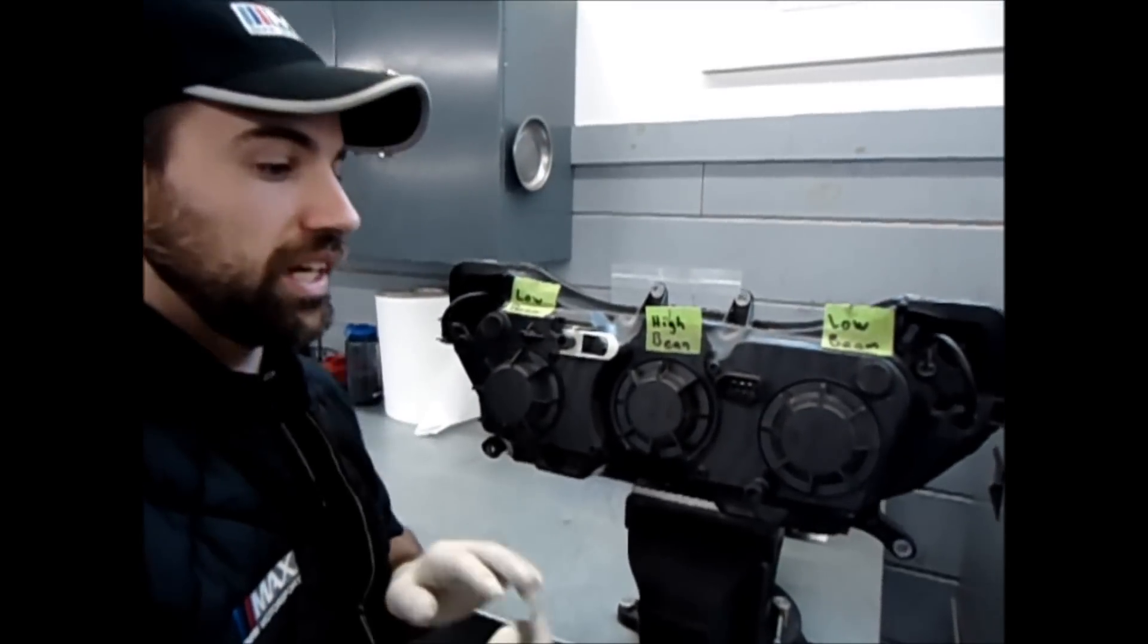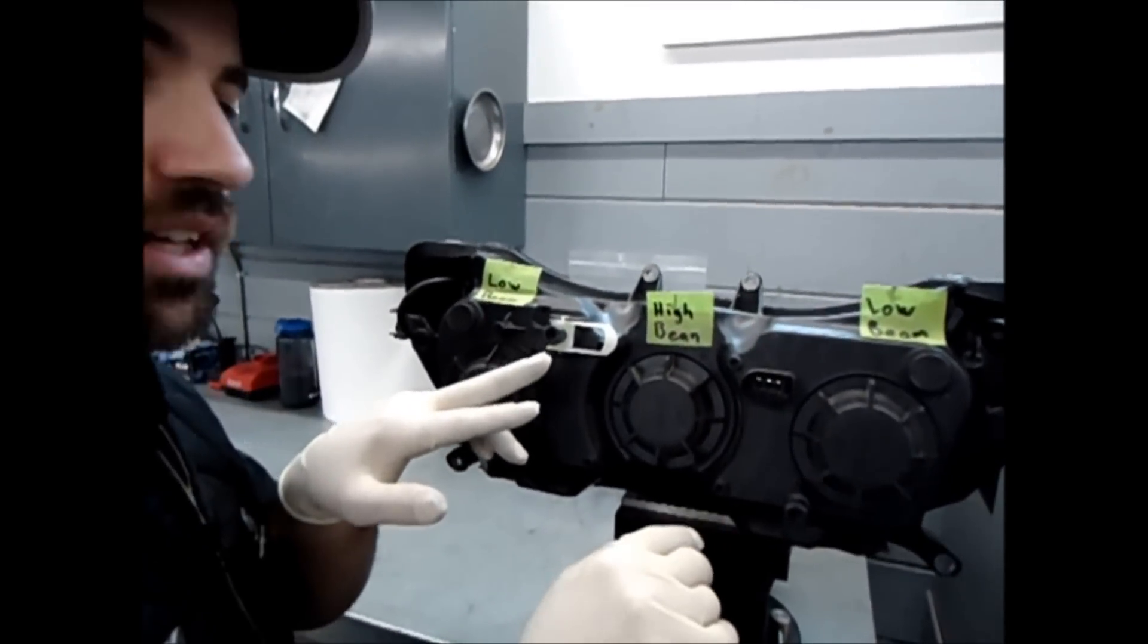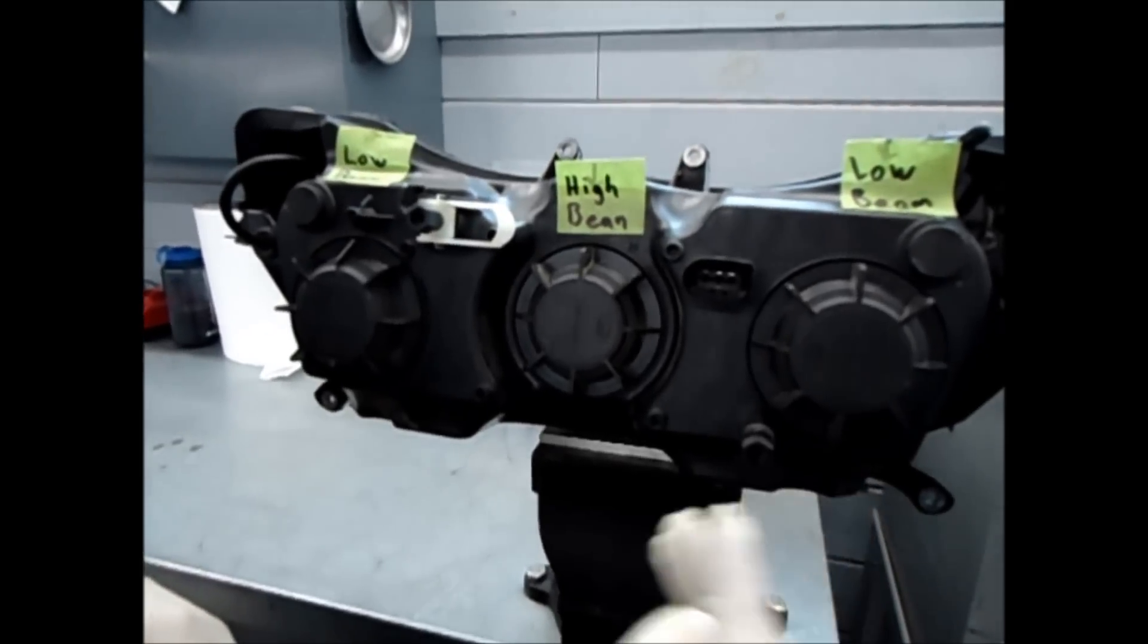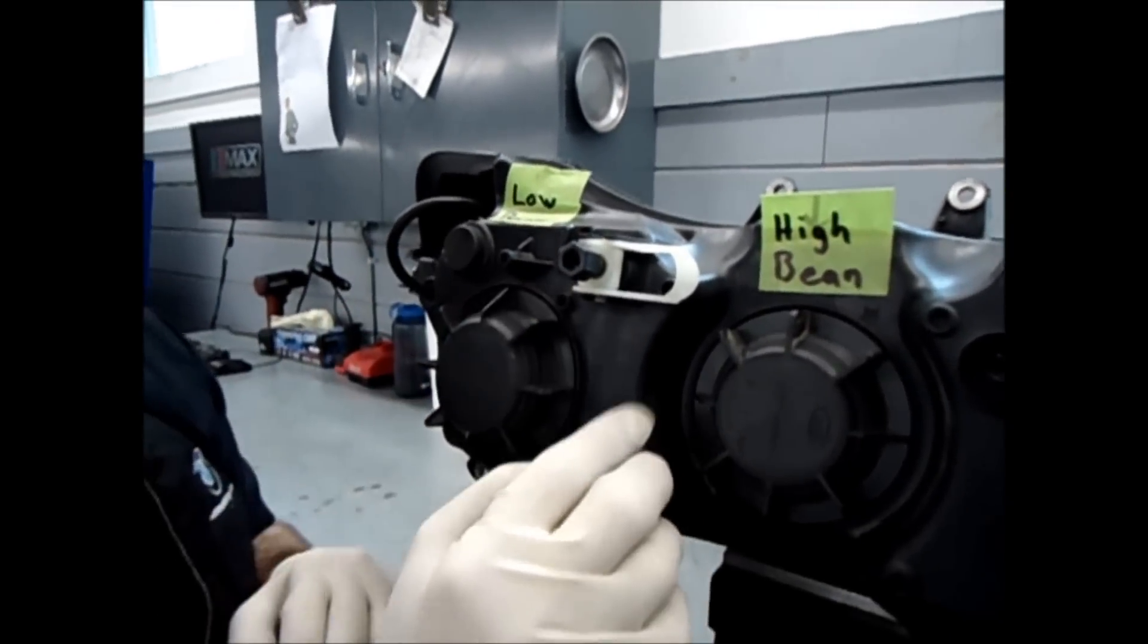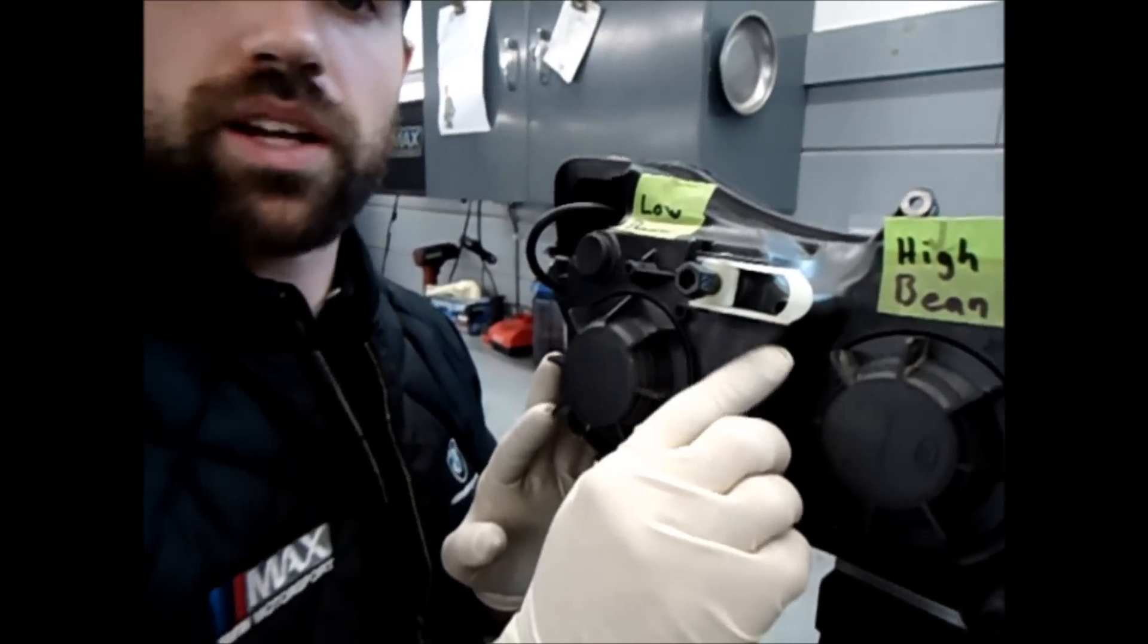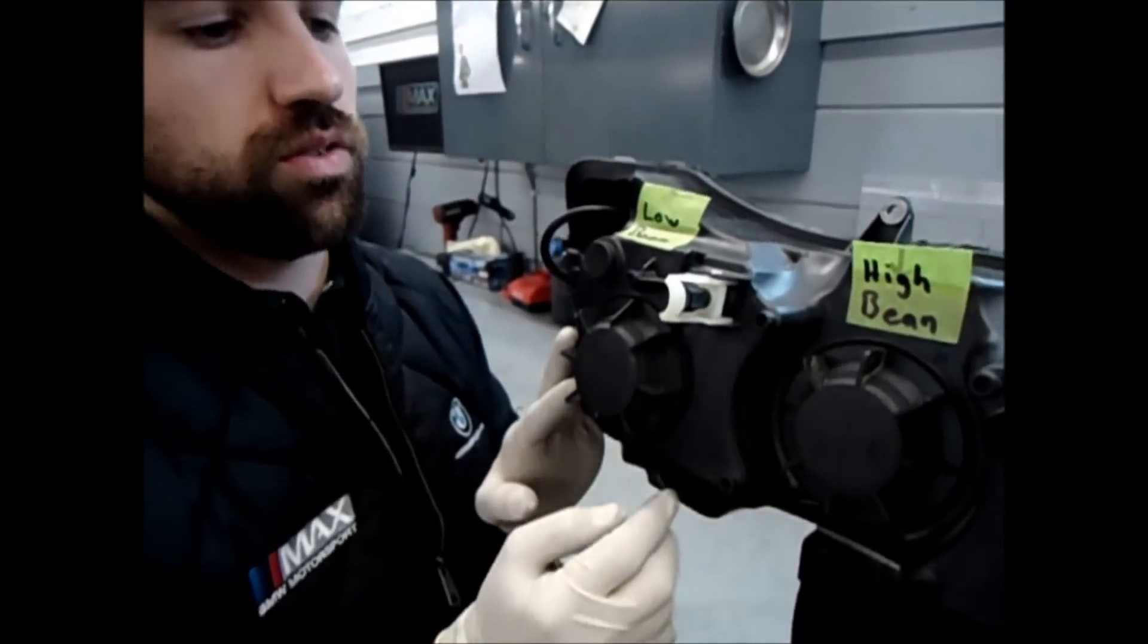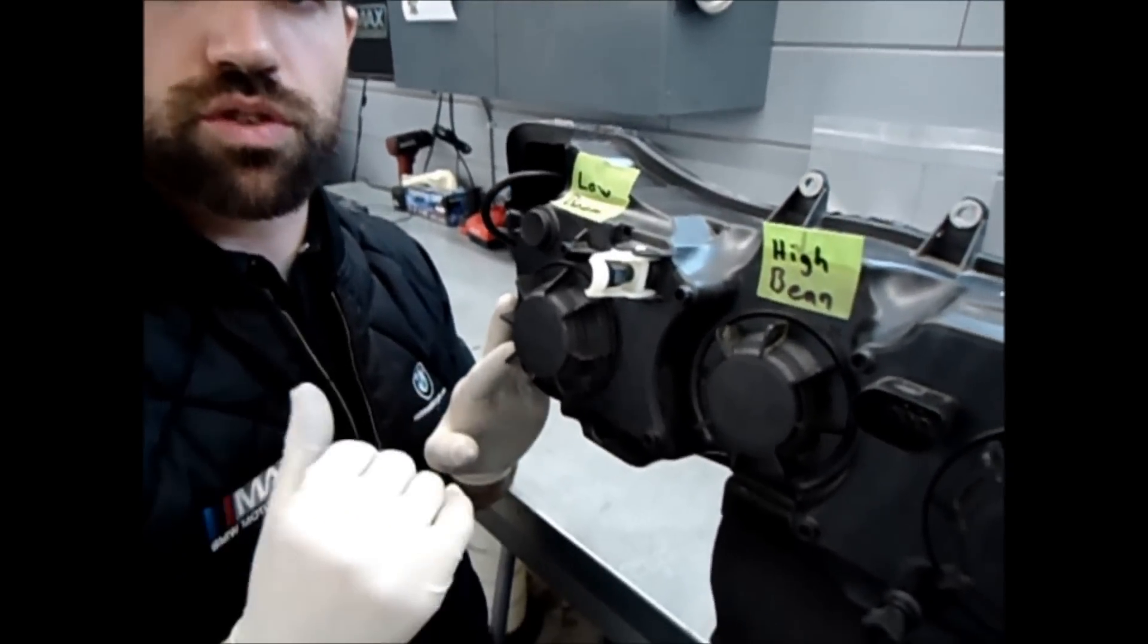While we have the headlight assembly here, I want to show you the two adjustments that are available. This one is right to left. This one is up and down with a headlight throw. This one also has a special adjustment for riding with the passenger. If you move that adjuster, it compensates for the rider weight.